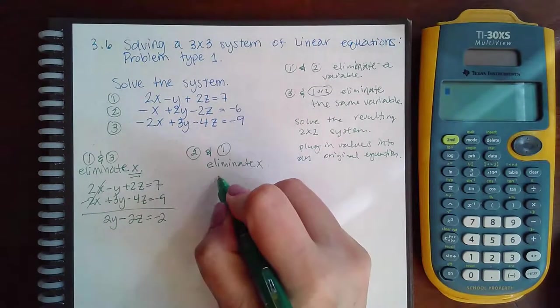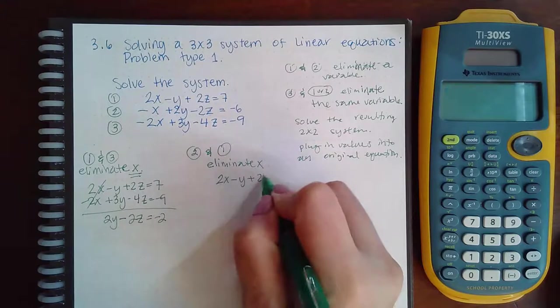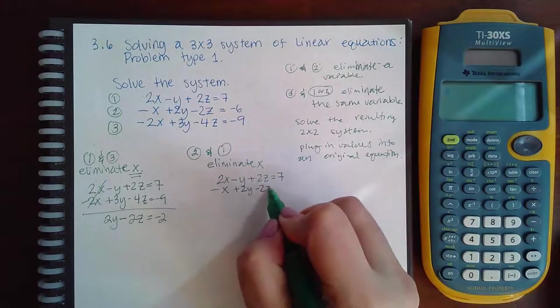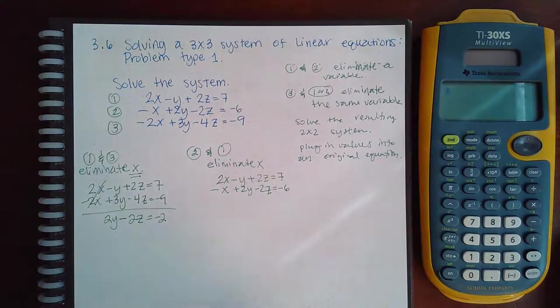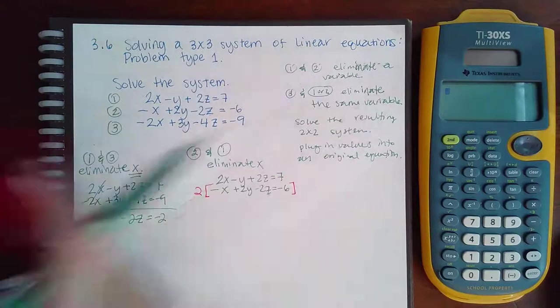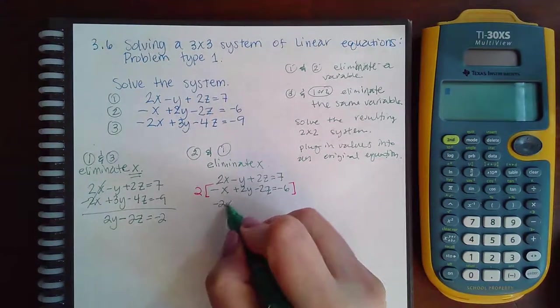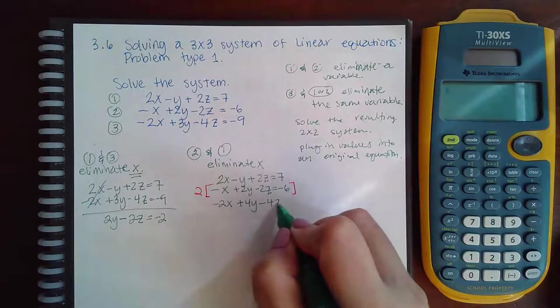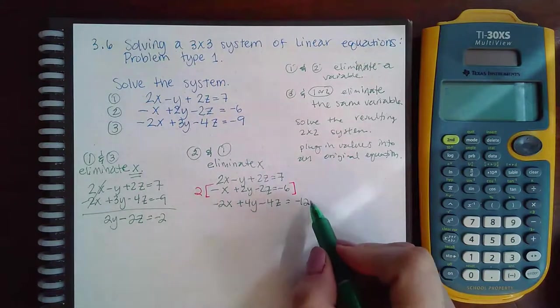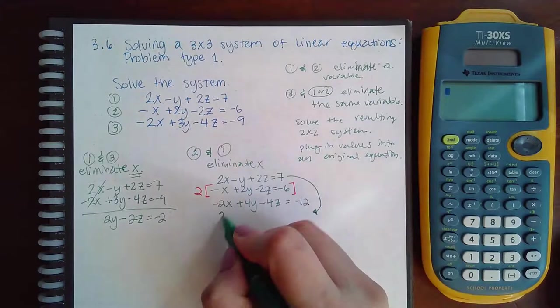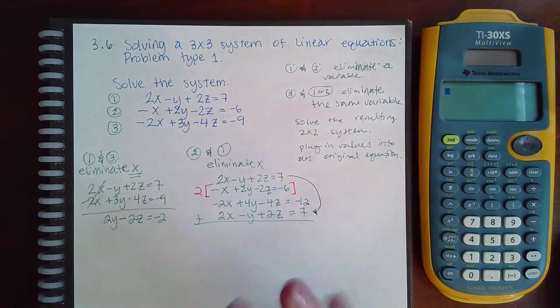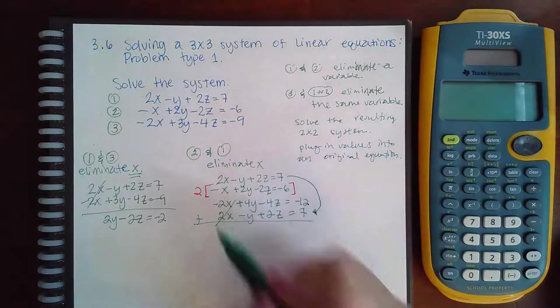So then now I have 2x minus y plus 2z, which is the top equation, and negative x plus 2y minus 2z, which equals negative 6, is the second equation. Now in order for me to cancel these out, I am going to have to multiply the bottom one by a 2. So then I get negative 2x, positive 4y, and a negative 4z equal to a negative 12. That's the new equation 2. I'm going to put equation 1 right underneath. I'm not going to change anything about it. Just want them next to each other so that when I add them together, I can clearly see where everything's coming from. So these will cancel again, which was the goal, and we get 3y minus 2z equal to negative 5.